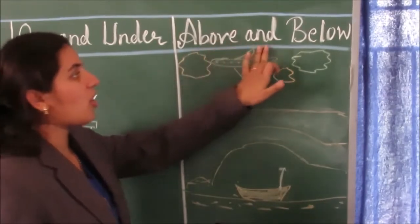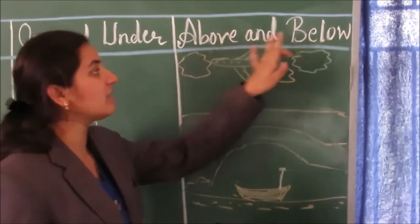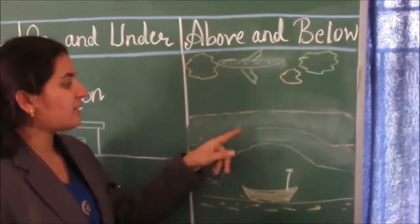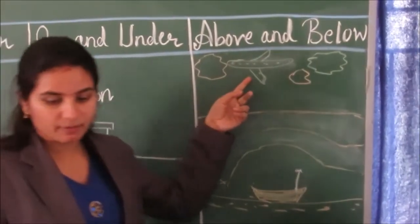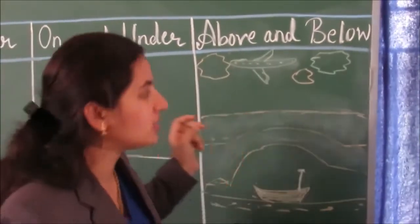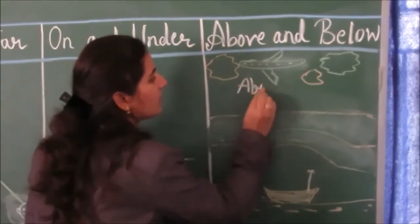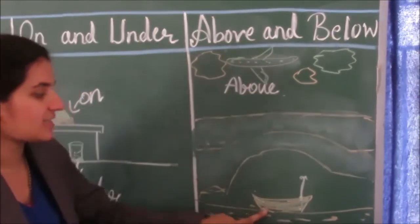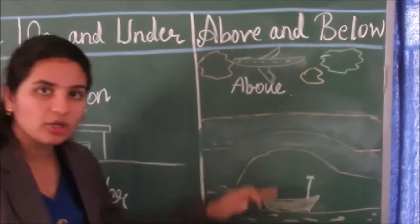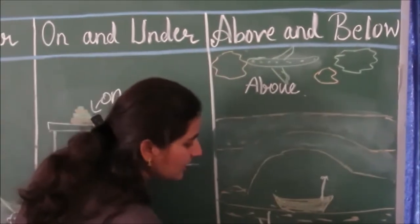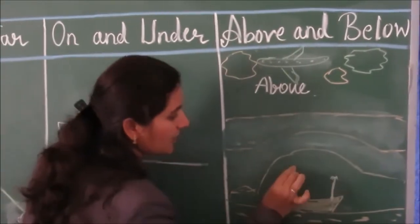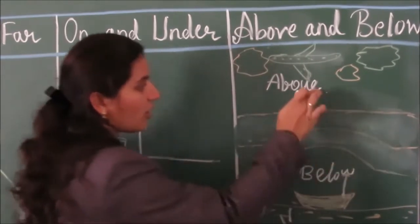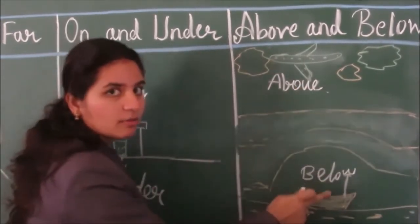Let us learn the next concept: above and below. The aeroplane is flying above the bridge. The boat is sailing below the bridge. Above, below.